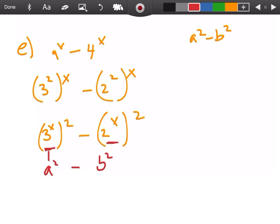But a is really equal to 3^x, so when you write out your factors it's going to be (3^x + 2^x)(3^x - 2^x). I'm going to double check that, make sure I got that one right. That's e, yes, looks good.